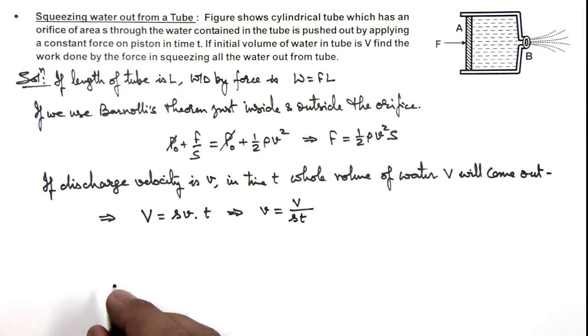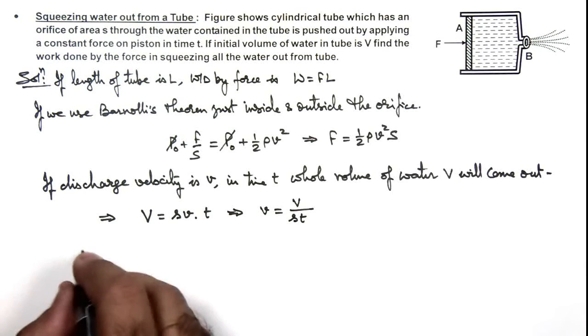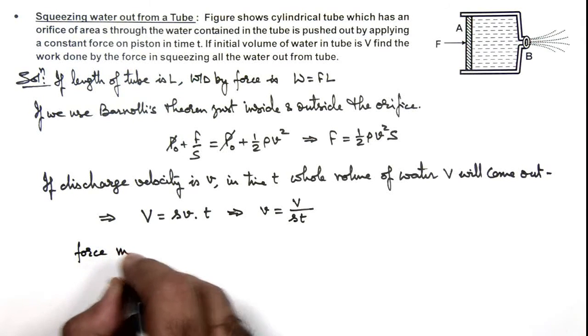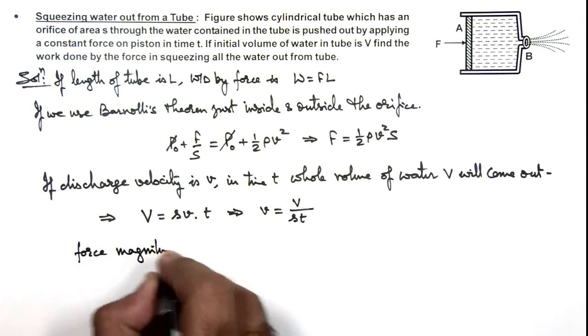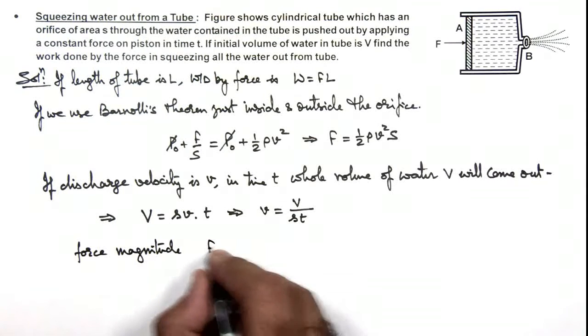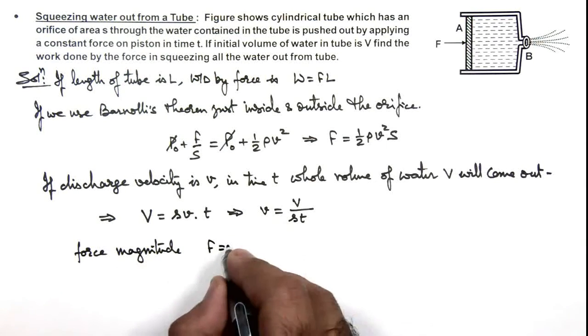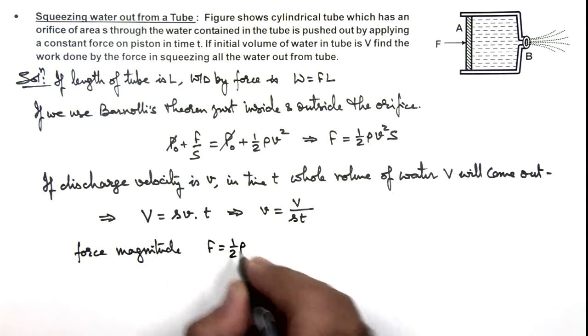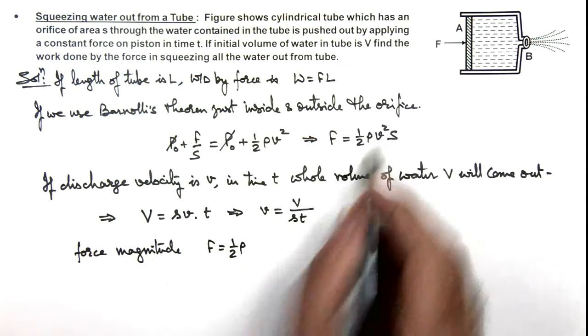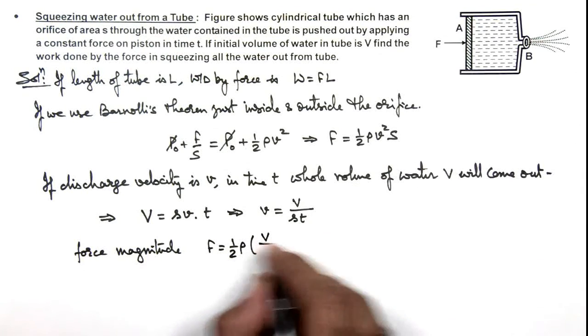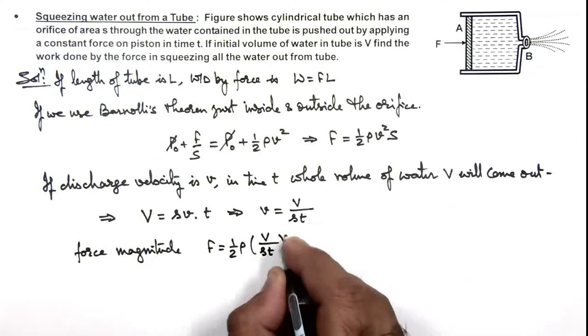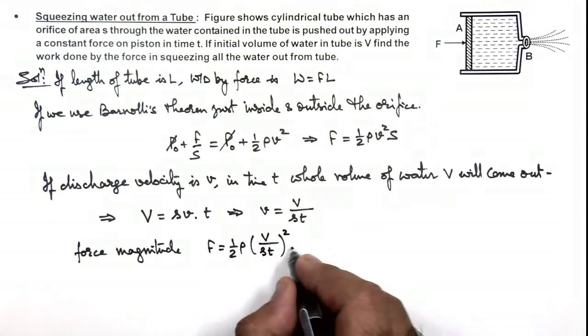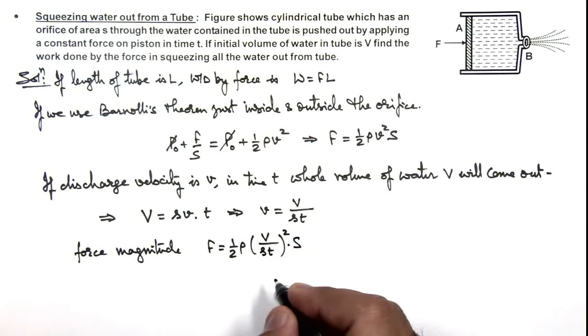In this situation, we are getting the value of force magnitude. Force magnitude is equal to half ρ times v² (we substitute v upon st) squared, multiplied by the area of cross section of the tube.